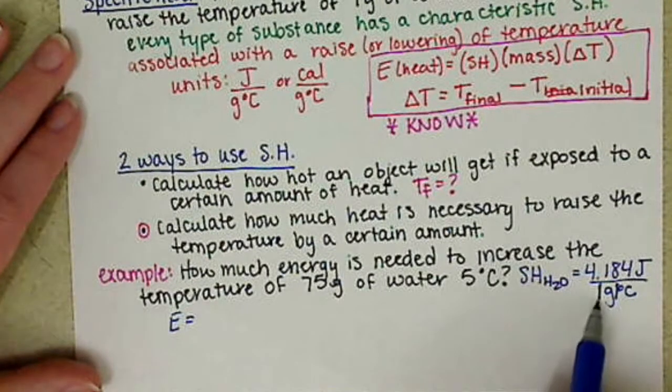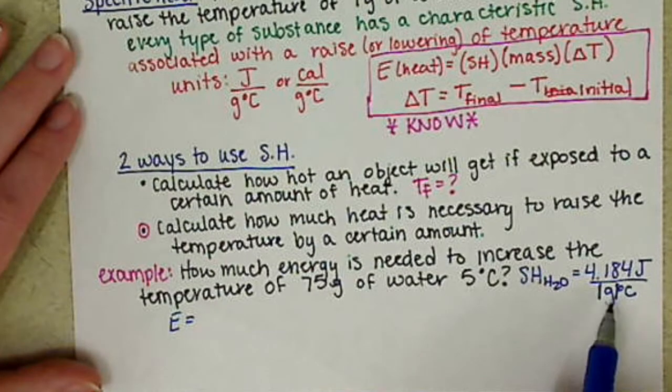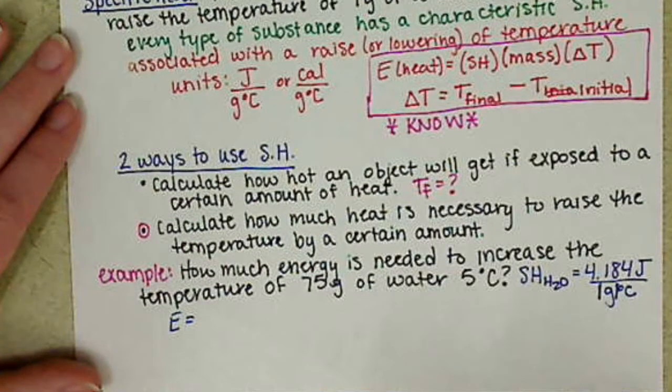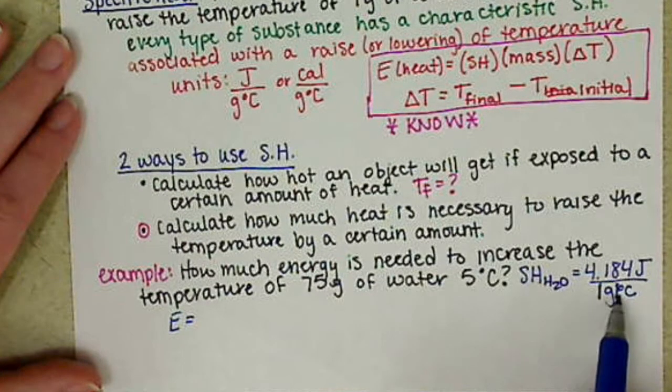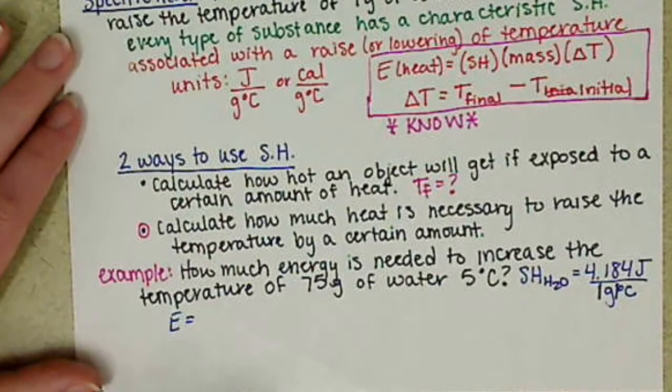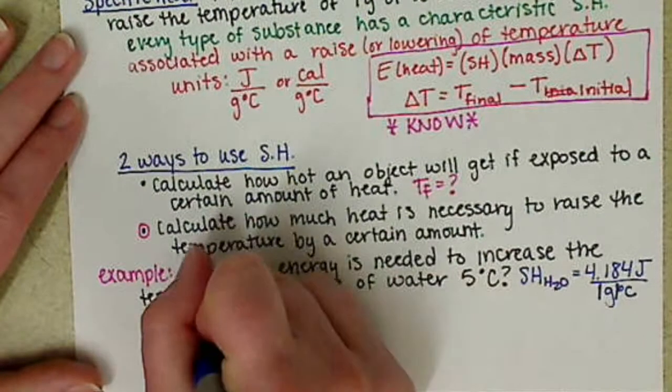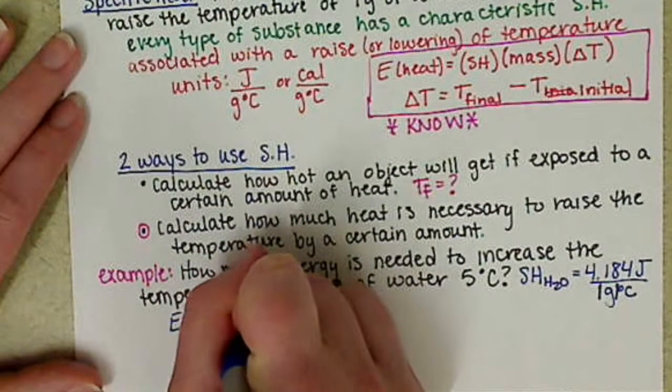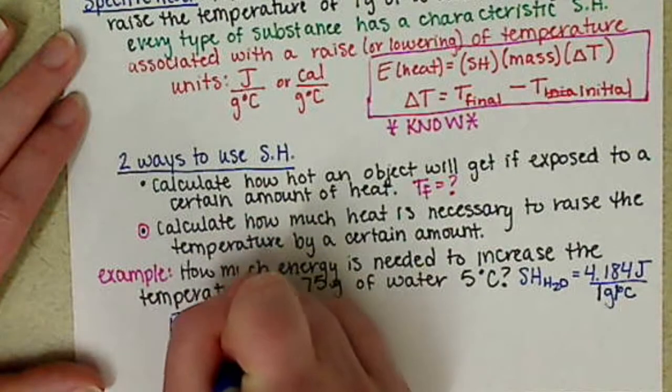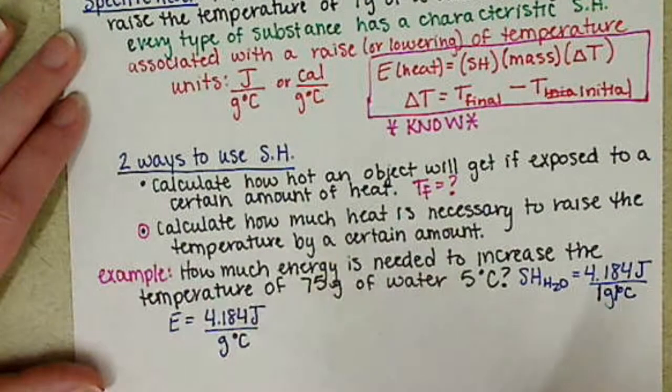And that we have 4.184 joules per 1 gram per 1 degree Celsius. So we don't want to plug numbers in here because we already have numbers assigned there. There's always a 1. So we want to take our specific heat value of 4.184 joules per gram per degree Celsius.